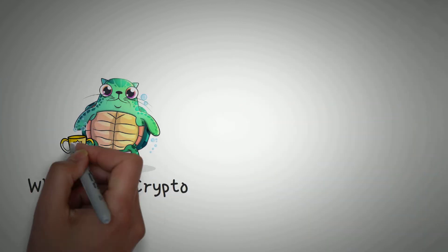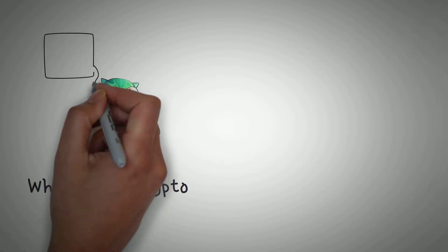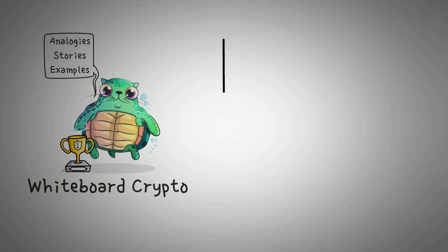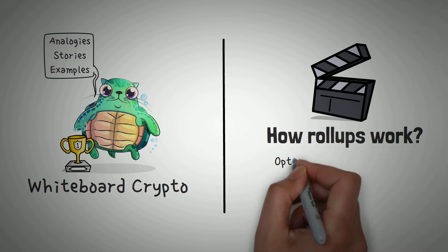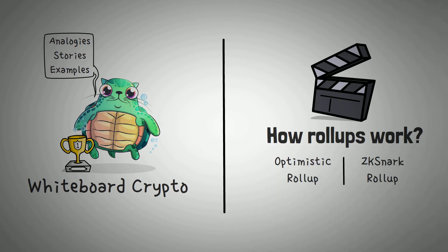Welcome to Whiteboard Crypto, the number one YouTube channel for crypto education. Here we explain topics of the cryptocurrency world using analogies, stories, and examples so that you can easily understand them. In this video, we are going to explain how rollups work, what the difference is between an optimistic rollup and a ZK snark rollup. Let's dig in.